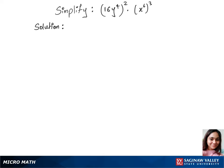To simplify this question we'll use the product rule of exponents. Let's first separate the whole square between the bases: 16 squared, times y to the power 4 whole squared, times x to the power 6, whole power 3.